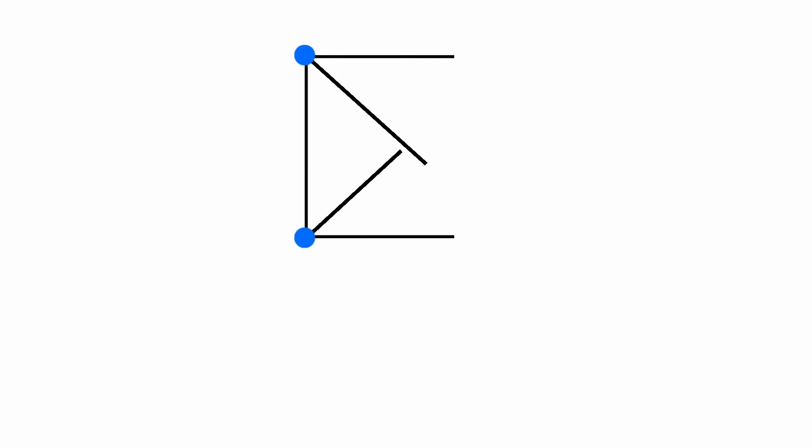A complete graph of n vertices is denoted by kn. For example, if you draw a square and its diagonals, the resulting graph is called k4.